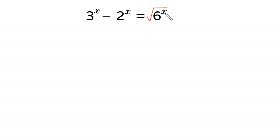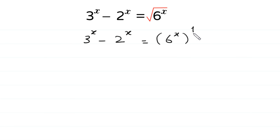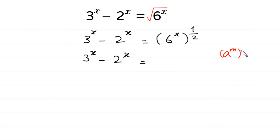First of all, we convert this radical form into exponential form. 3 to the power x minus 2 to the power x is equal to — in exponential form — this square root of 6 to the power x can be written as 6 to the power x, whole to the power 1 over 2. Next, according to the property of exponents, a to the power m whole to the power n is equal to a to the power m times n. This power x will be multiplied by this power 1 over 2, giving 6 to the power x over 2.